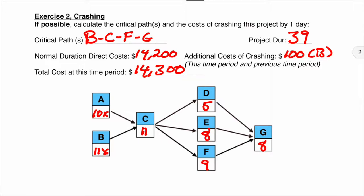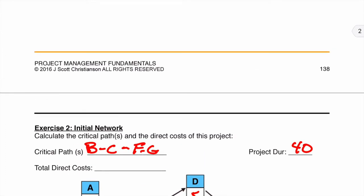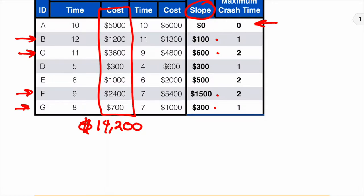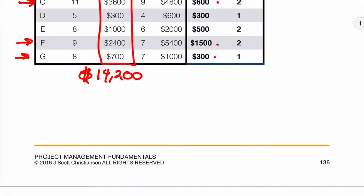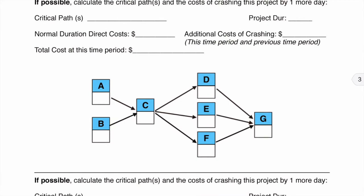So that is the cost of the project at 39 days. So now we need to look at C, F, and G because B is now no longer a candidate. So I have $600 for C, $1,500 for F, and $300 for G. So I am going to choose to crash G because that is going to be the cheaper option. Would it still work if I crashed F? Well, yes it would, but that would not be the cheaper option. So I am going to put 7 here, but I am going to put an X because once again, G is one of these that can only be crashed once.